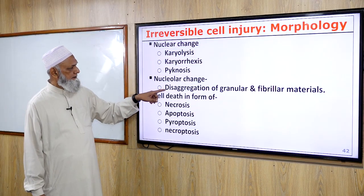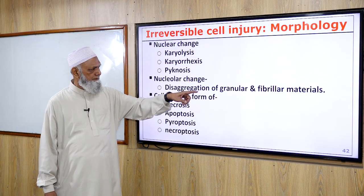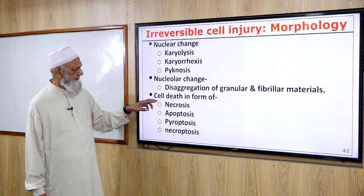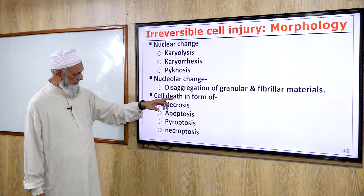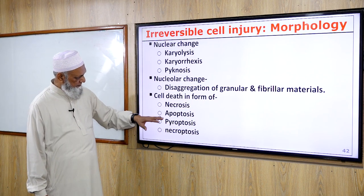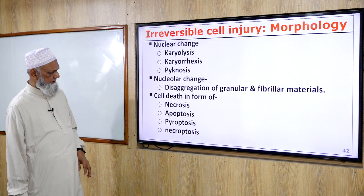Nucleolar changes show disaggregation of granular and fibrillar materials. Cell death occurs in the form of necrosis, apoptosis, necroptosis, and pyroptosis.